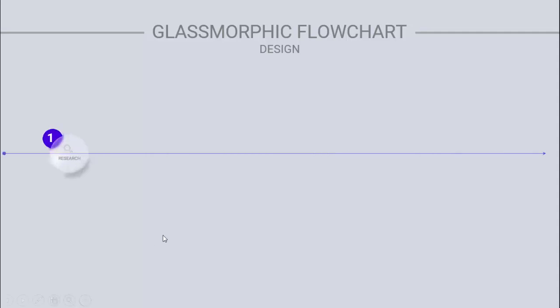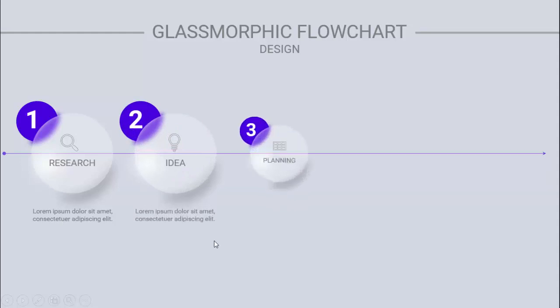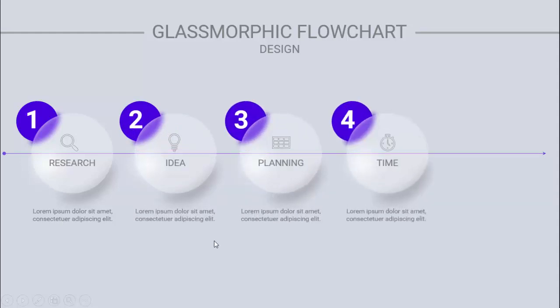In today's tutorial I'm going to show you how to create a glassmorphic flowchart design in PowerPoint. Here's how the slide works: when I click, an arrow comes in, then the first option appears with a glassmorphic effect — number one with an icon and the text. I've put 'Research' here and you can add detailed text. When I click again, the second option comes, then Idea, Planning, Time, and Success.